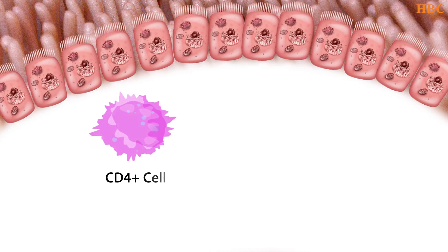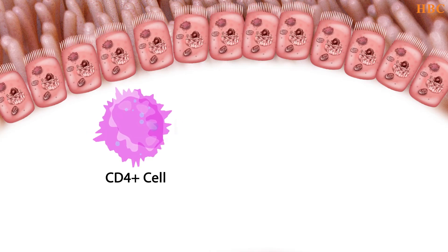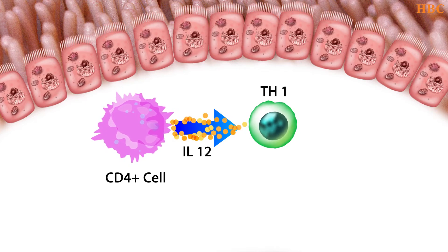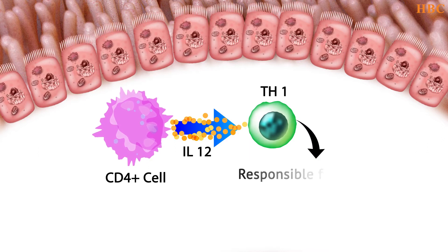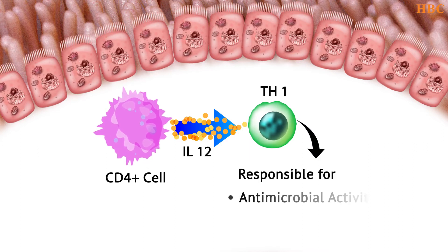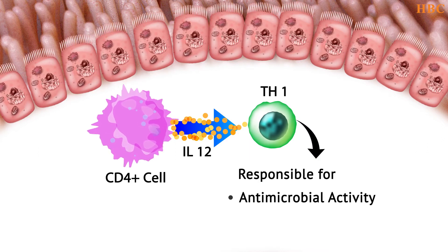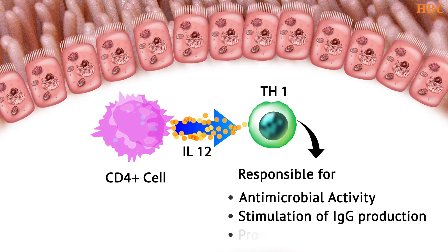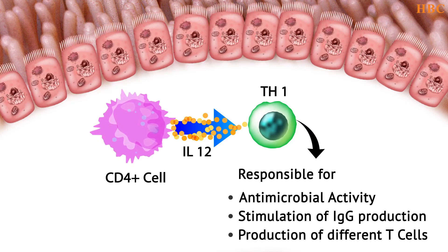After activation of CD4+ cells by dendritic cells, they get converted into T helper cell 1 in the presence of IL-12. T helper cell 1 is responsible for antimicrobial activity, stimulation of IgG production and growth, and production and differentiation of different T cells.